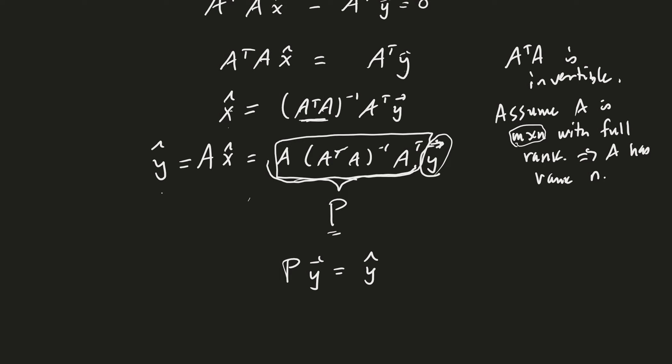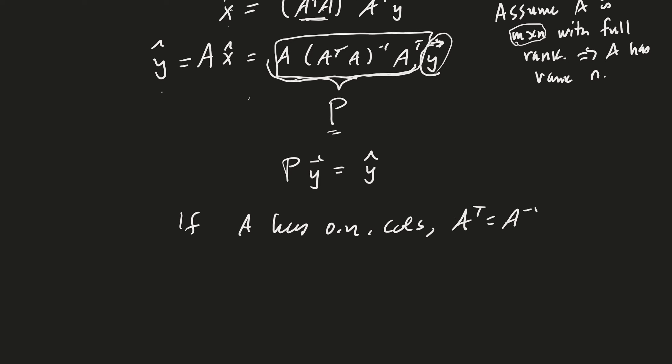Okay. Very good. So, by the way, you might notice if A has orthonormal columns, then A transpose A is just the identity matrix. And so, we get A, A transpose, right? I'm waving my arms at the signal and you can't see my hands. So, sorry about that. But A times (A transpose A) inverse equals A times I times A transpose. And that is equal to A A transpose. And this, we said, was the projection matrix, right?